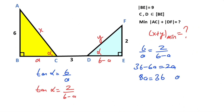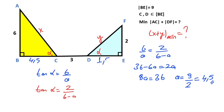So 36 minus 6a equals 2a, giving 8a equals 36. Therefore a equals 9 over 2, which is 4.5. And the remaining part here is 1.5.